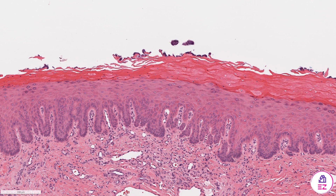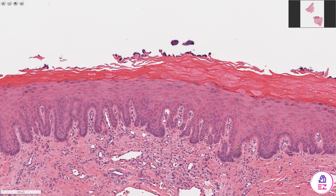Hello and welcome to Path Made Easy. Today's case is an example of moderate epithelial dysplasia. On screen we have some oral mucosa, and the epithelium is on the surface here with the lamina propria beneath that.